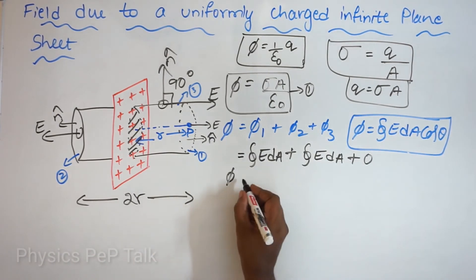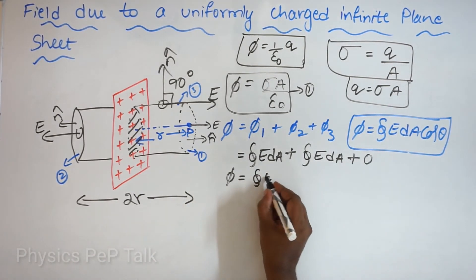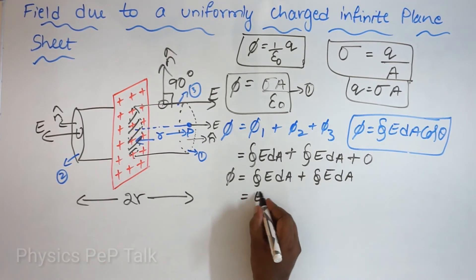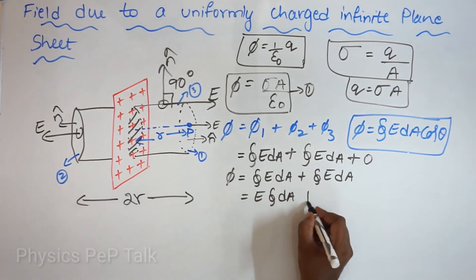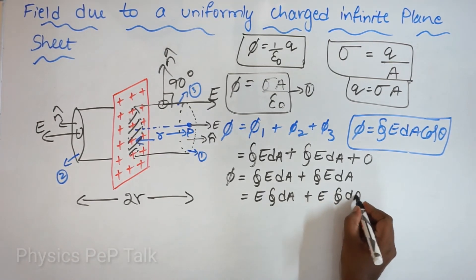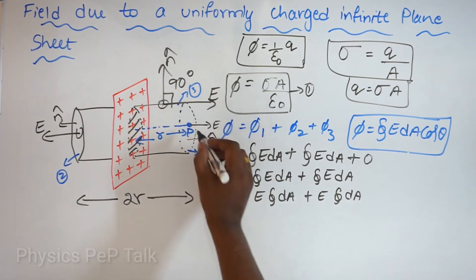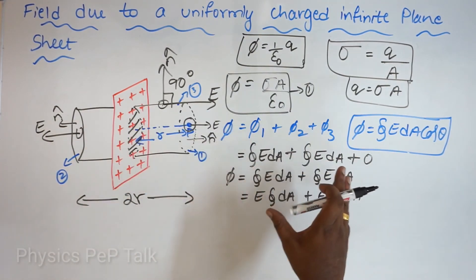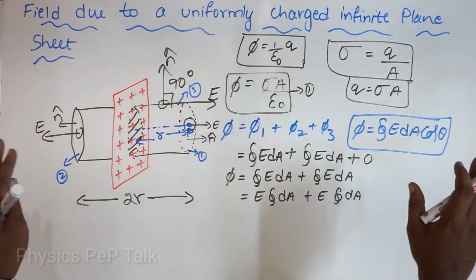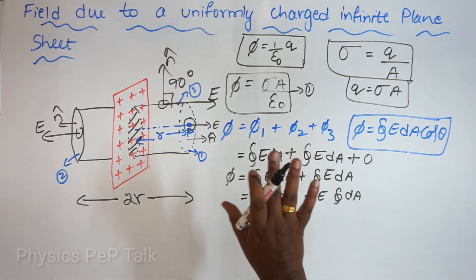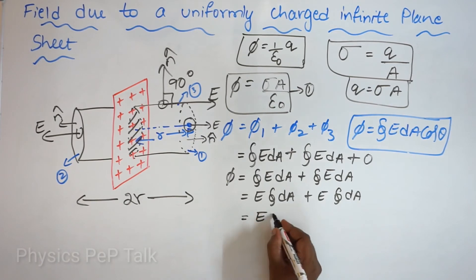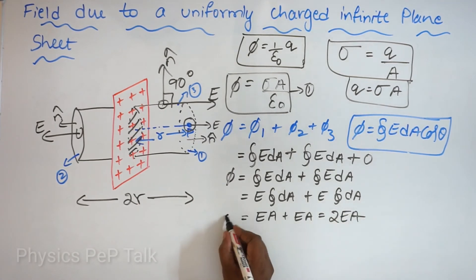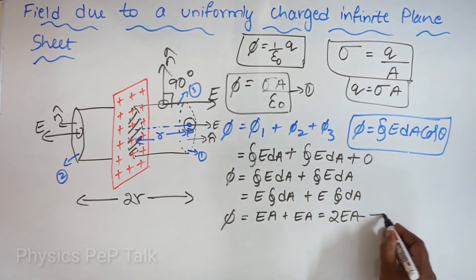So the total flux through the cylinder is integral of E dA plus integral of E dA. Since E is constant, the total flux becomes E times A plus E times A, which equals 2EA. The total flux through this cylinder is 2EA. I will call this equation 2.